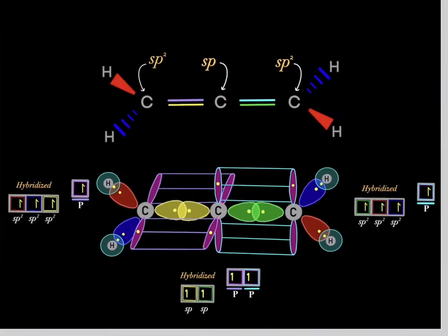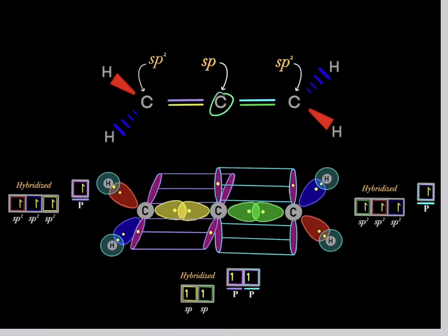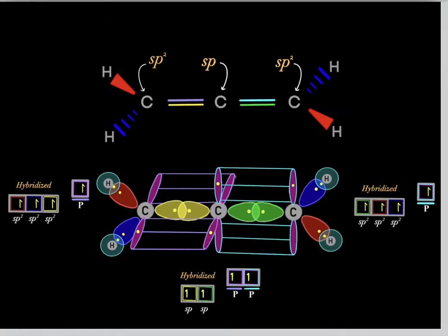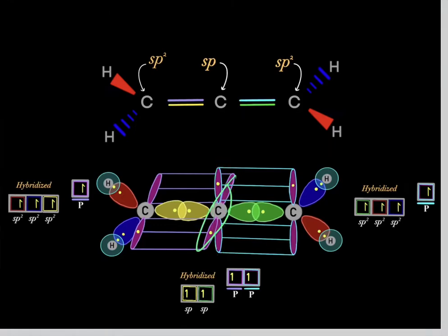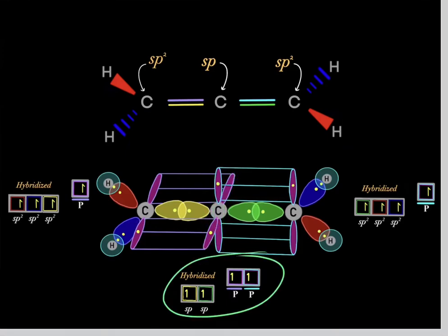Each extra bond requires one p-orbital. Two extra bonds on the central carbon require two p-orbitals, and the only hybridization with two p-orbitals is sp-hybridized. That explains what's going on with the bonds in this compound.